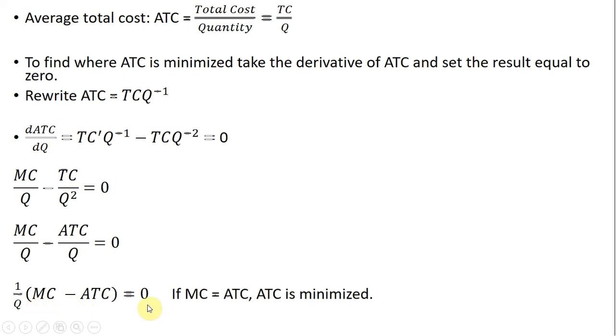When will this equal zero, this expression? It'll equal zero when marginal cost equals average total cost. So that is the proof. Okay, I hope you found this video helpful.